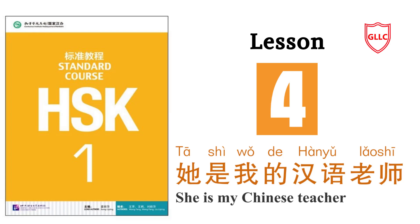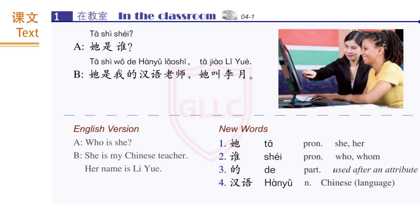第四课 她是我的汉语老师 Lesson 4: She is my Chinese teacher. Text 1 — 她是谁? 她是我的汉语老师，她叫李月。 New words: 她、谁、的、汉语。